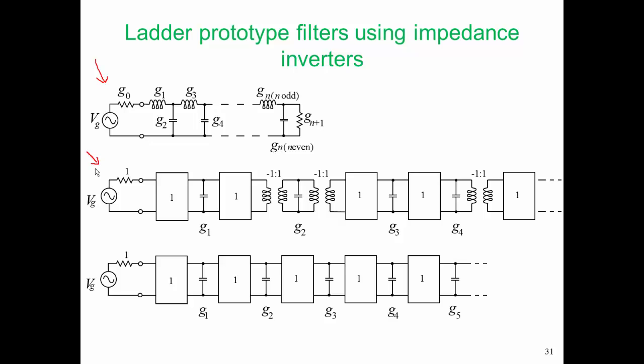We can transform that circuit by replacing all of the series inductors by inverters and shunt capacitors. That is what's done on that middle prototype circuit. And finally, our form becomes that form on the bottom because we can delete the inverting unity transformers because they don't have any effect except for a 180-degree phase rotation, the same phase rotation at all frequencies.